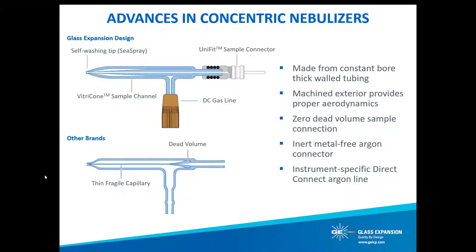Now let's examine the differences in Glass Expansion's nebulizer designs. All concentric nebulizers from Glass Expansion feature our Vitricone sample channel. Non-Glass Expansion designs typically use a hand-drawn glass sample capillary, where the internal diameter can vary, preventing laminar nebulizer flow and creating points where particulates may lodge. The Glass Expansion Vitricone sample capillary is entirely different — it's machined from a thick-walled glass capillary providing a highly reproducible geometry and constant internal diameter from sample inlet to the tip. In combination with our Unifit sample connector, this provides a zero-dead-volume sample connection.